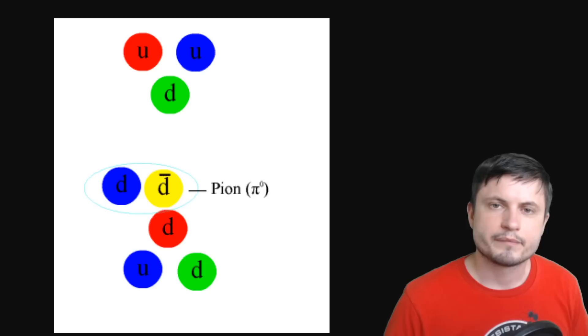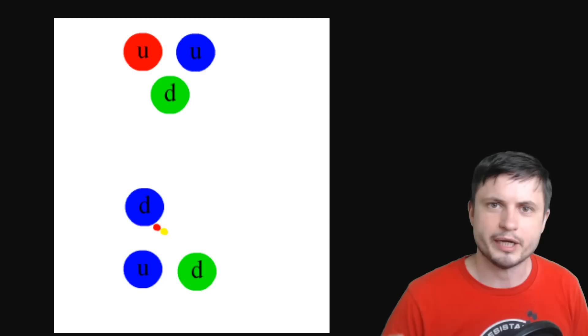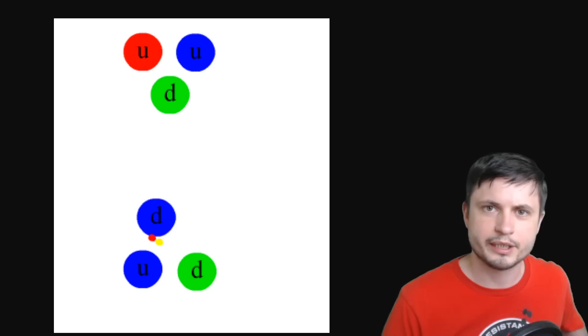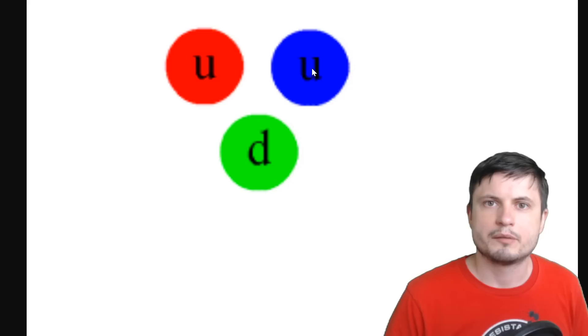This animation here kind of shows you how sometimes protons and neutrons interact with each other by sending other subatomic particles toward each other. And this is of course how some of the nuclear reactions work. So the idea here is that proton itself is made up of other subatomic particles.